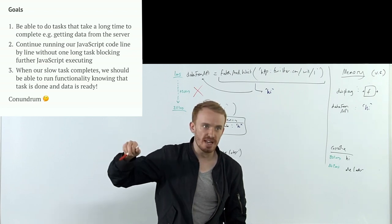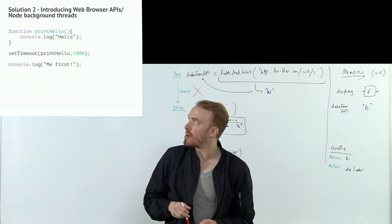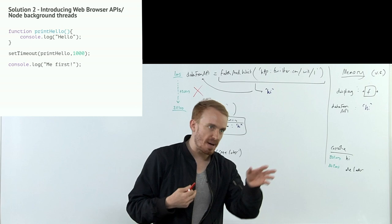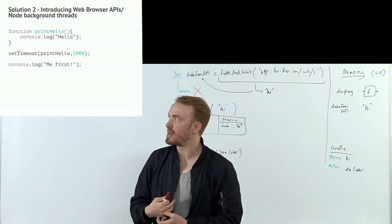We've got to introduce those to have any chance of solving this three-way conundrum. The only chance you have of solving it is to introduce web browser features, or in Node they're known as background threads or APIs in Node as well.